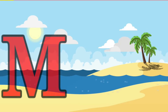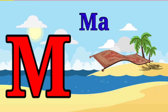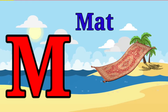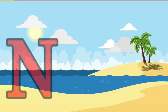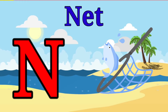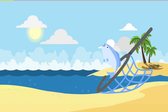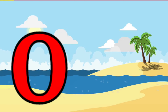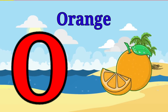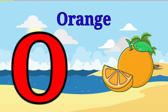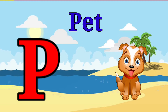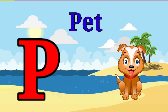M is for mat, m-m-mat. N is for net, n-n-net. O is for orange, o-o-orange. P is for pet, p-p-pet.